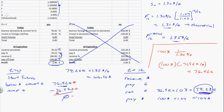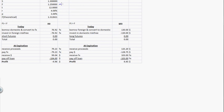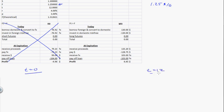Now let's look at the other side of the transaction. Everything is the same except the futures price being offered is $1.25 per euro. The theoretical price is still $1.31. So the futures are priced too low — the thing is worth $1.31 but selling for $1.25.